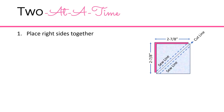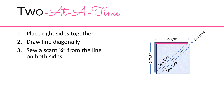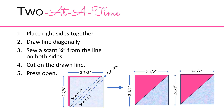Here are some examples of ways to cut and sew HSTs. For two at a time, you're going to place right sides together, draw a line diagonally, sew a scant quarter of an inch from either side of the line, and then cut on the line. Then go ahead and press. For four at a time, you're going to place right sides together, sew around the perimeter a scant quarter of an inch, and then cut diagonally from corner to corner.